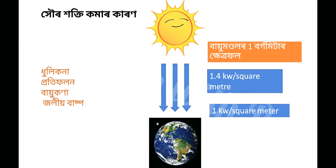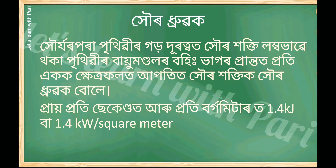We have to note: 1 kW per square meter. This is 1.4 kilowatts per square meter, or 1 kilowatt per square meter. This is 1 meter per square meter, which is 1 centimeter per square meter. Let's show you how to read it.